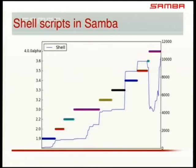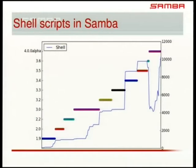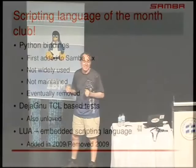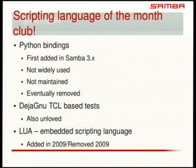Shell scripts have grown a lot in Samba. For a while we got into a scripting language of the month club — a term that Tridge used rather derisively of Python at one point. We had Python bindings; Python was the cool thing. Tim Potter had added Python bindings to Samba 3, but things weren't maintained, they weren't loved, and Python wasn't the fad that it became later. These were eventually removed as just unused and broken. We also had DejaGNU TCL test scripts that were added, but also unloved and not automatically run, so broken and gone away.